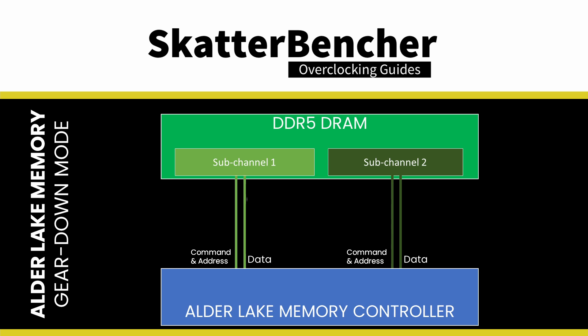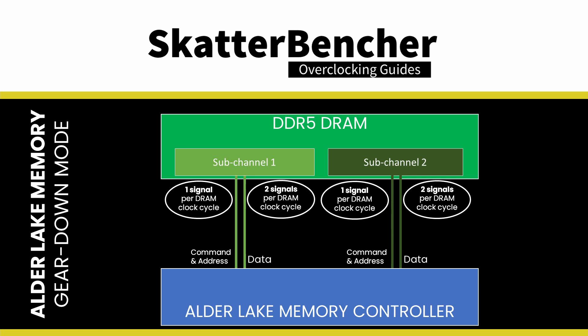As the name already explains, when the CPU wants to read or write data to the memory, it uses a command and address to specify what needs to be done and where. The actual data is sent over the data bus. The data bus is DDR, or Double Data Rate, meaning it can send two signals per memory clock cycle, on both the rising and falling edge. The command address bus is SDR, meaning it can process one signal per memory clock cycle, on the rising edge.